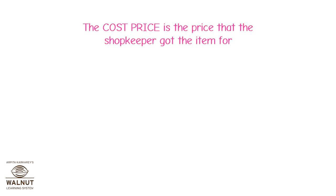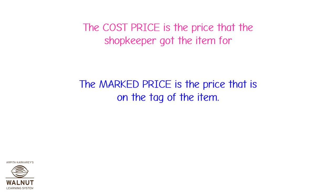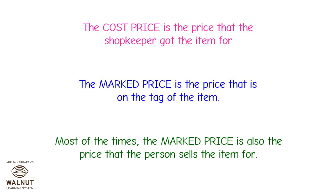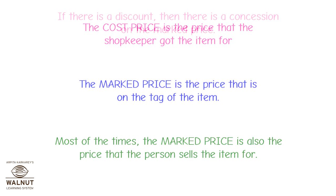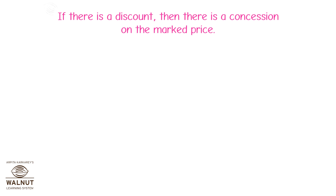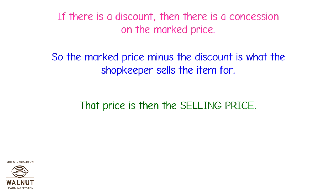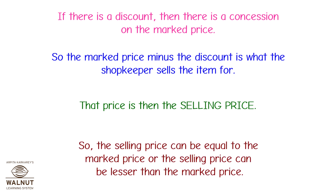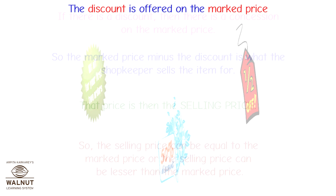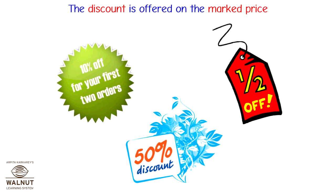The cost price is the price that the shopkeeper got the item for. The marked price is the price on the tag of the item. Most of the times, the marked price is also the price that the person sells the item for. If there is a discount, then there is a concession on the marked price — the marked price minus the discount is the selling price. The selling price can be equal to the marked price or lesser than it. The discount is offered on the marked price.